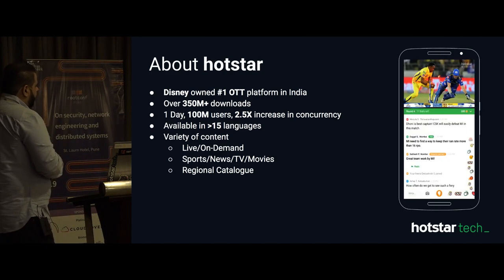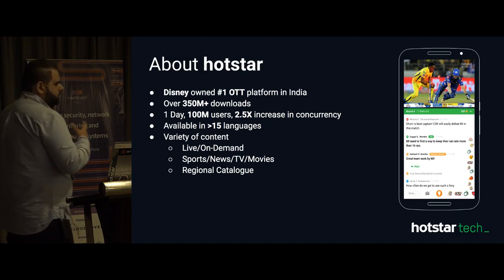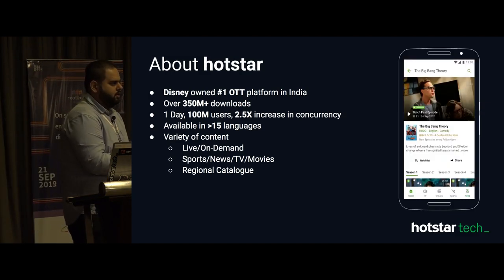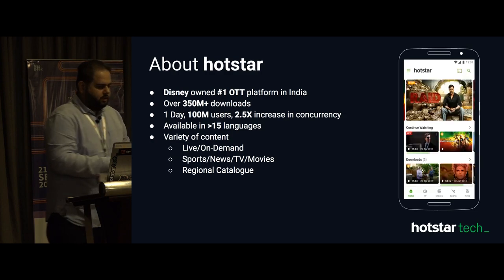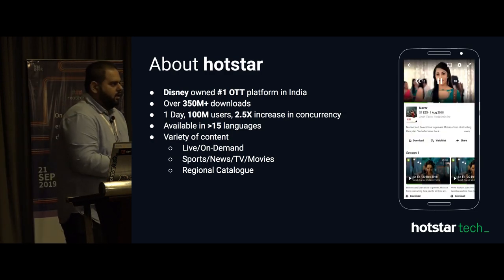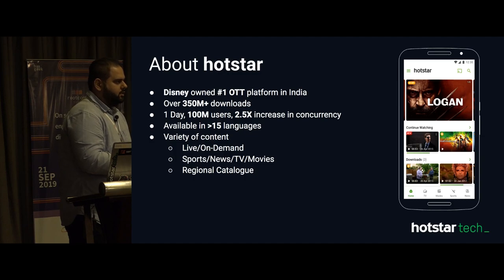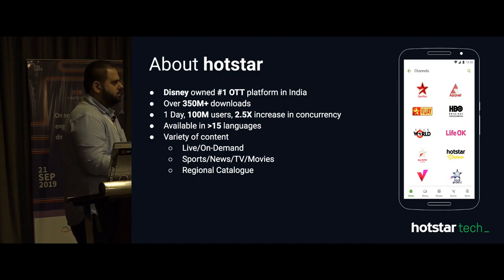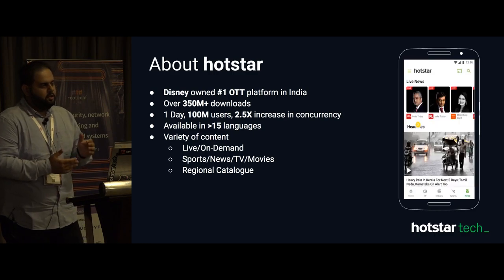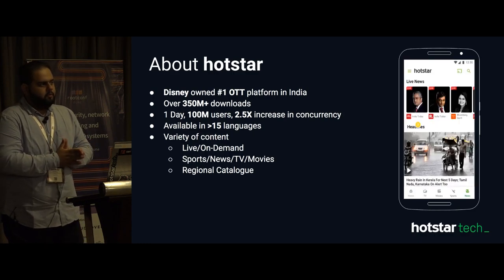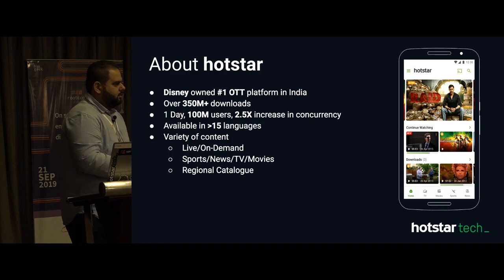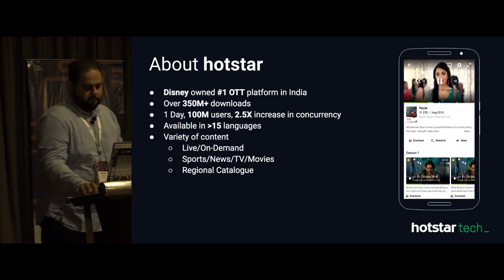That is the scale — this is a 2.5x increase in what we had before. This year during IPL we did 18.6 million, but before that the biggest concurrency we had was during IPL 2018 at 10.3. So from last year to this year there has been a 2.5x increase in the concurrency we can handle.